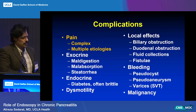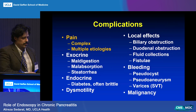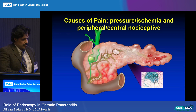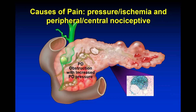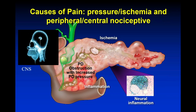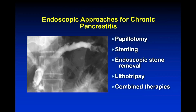Most of the time when we talk about the role of endoscopy, we're thinking more about managing the complications — really the painful complications for the most part. It's important to understand that pain is a complex feature. There are many causes and targets in the pathophysiology of pain. Primarily we're talking about ductal hypertension relief, and that's where we can help. But that's not really the only cause of pain, so you can perfectly drain someone's pancreas and they can still have pain. You can remove their pancreas and they can still have pain.